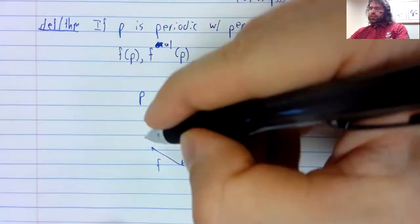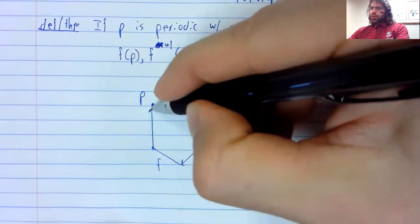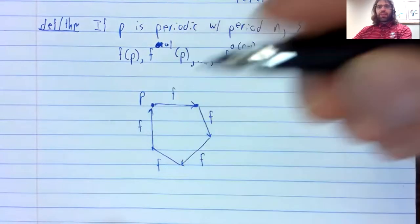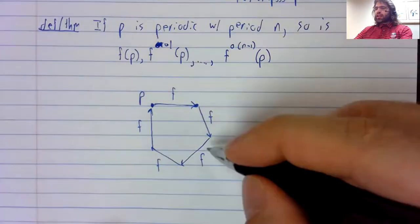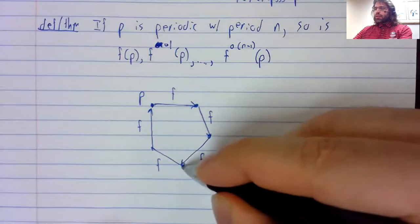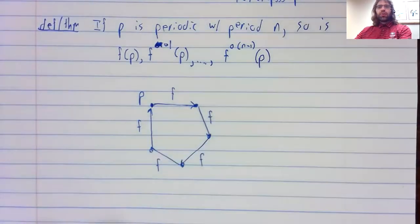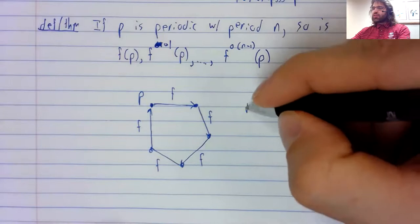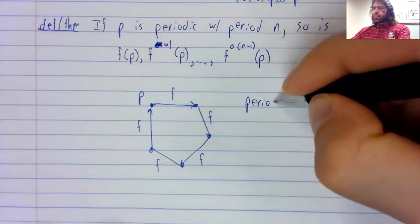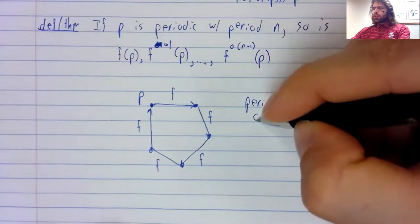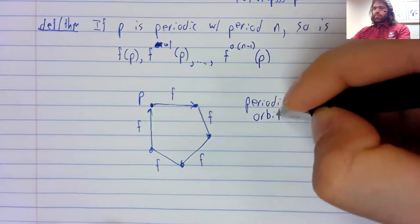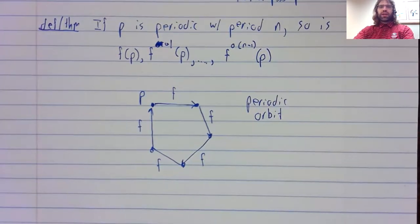And eventually we wind up back where we started. And these periodic points that we get are called a periodic orbit.